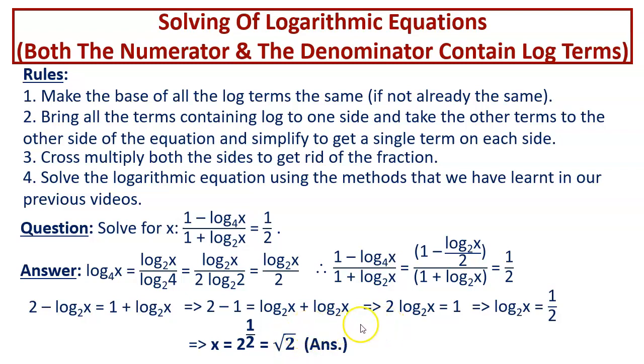We are not having any extraneous solution in this case. But if you write 1 as log of 2 to the base 2 and make this side as log of x squared to the base 2 and equate the arguments, you will be getting x squared equal to 2. So, x equals plus minus root 2. You will be getting two values of x and you have to reject the negative root 2 part because you cannot have a negative argument.